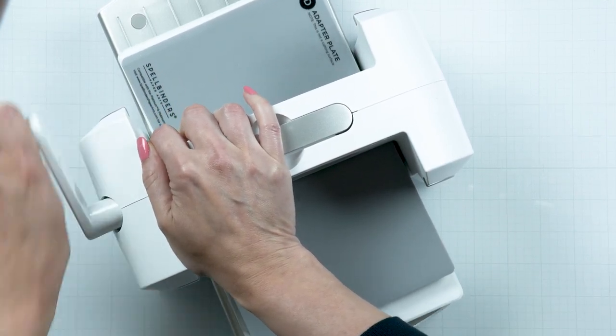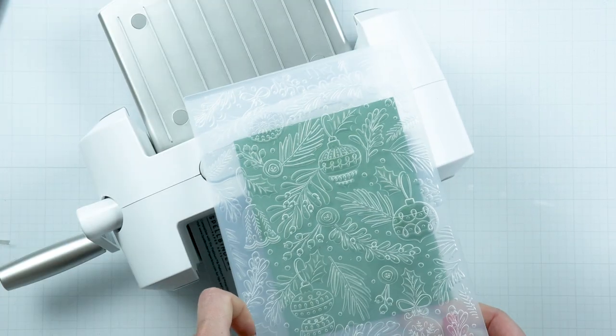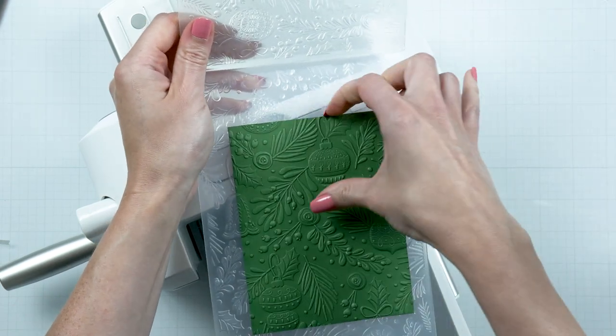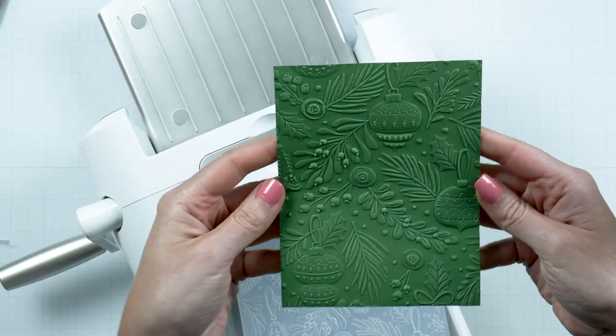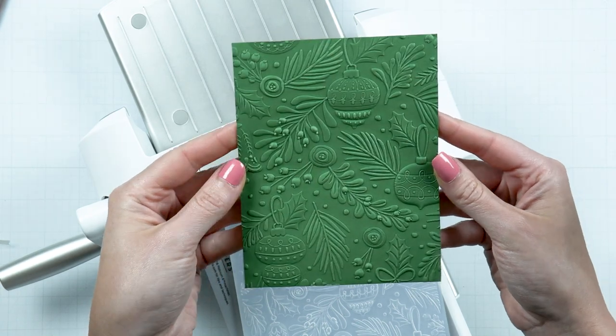Place inside the folder and send through the die cutting machine to emboss. You'll need to use our universal plate system to get the best results with our 3D embossing folders.